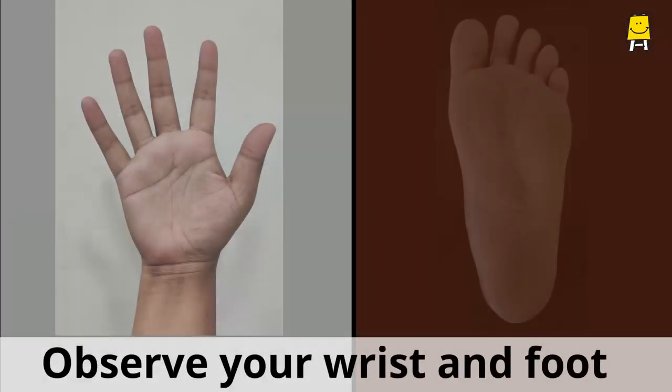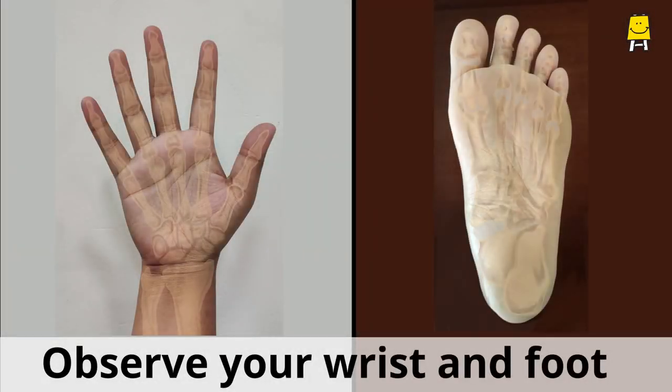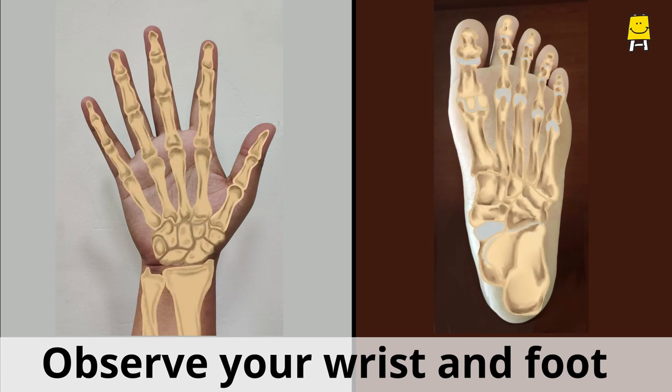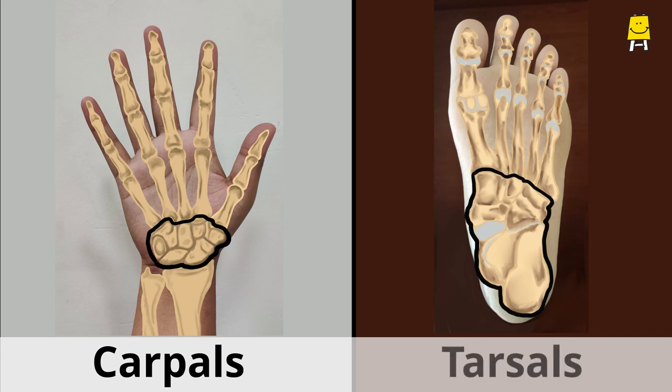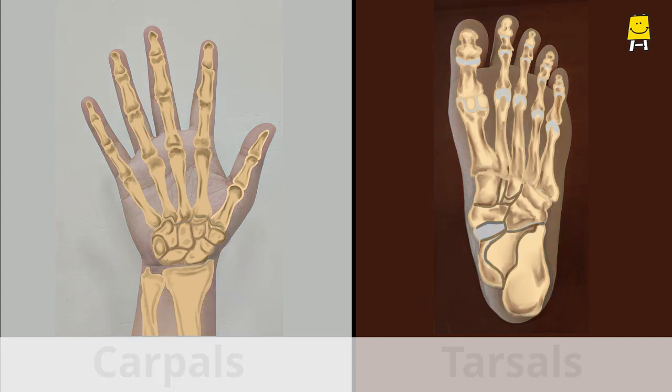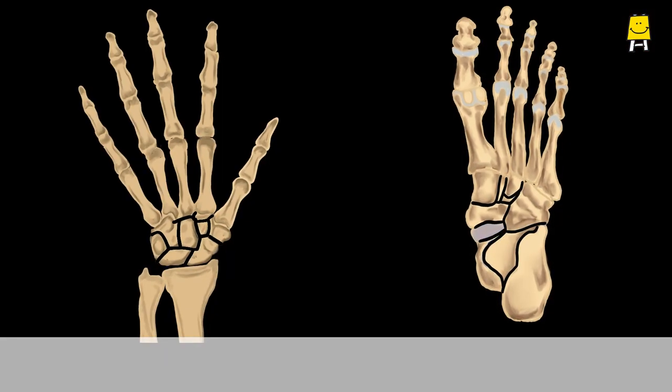Observe your wrist and foot. We have a total of eight wrist bones called carpals and seven foot bones called tarsals. These bones have very simple yet important joints which allow them to move to some extent.